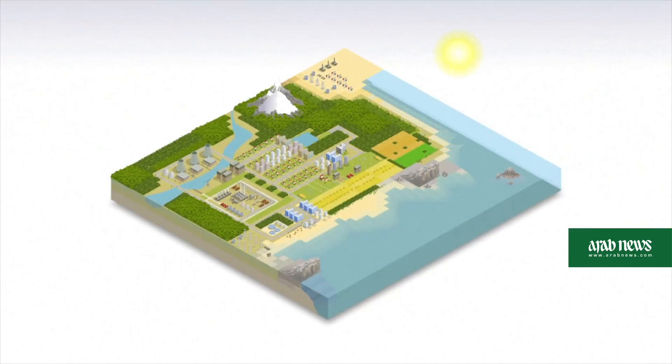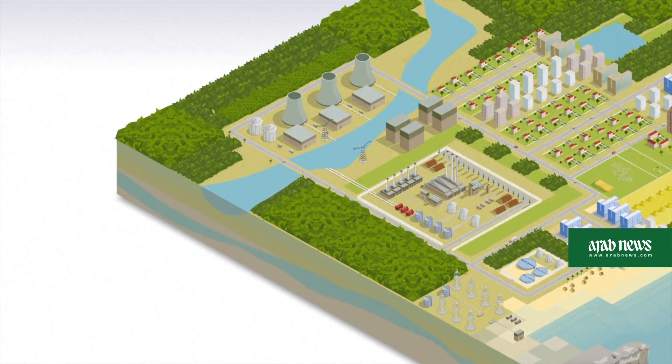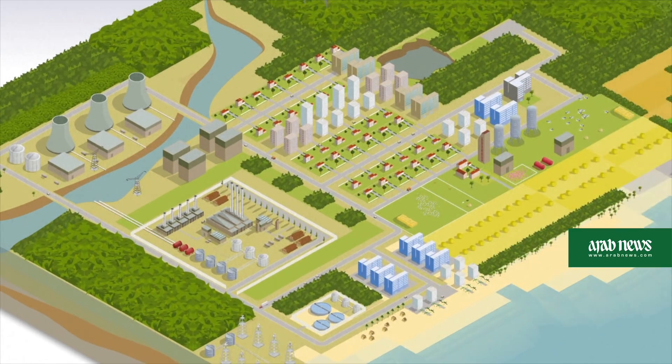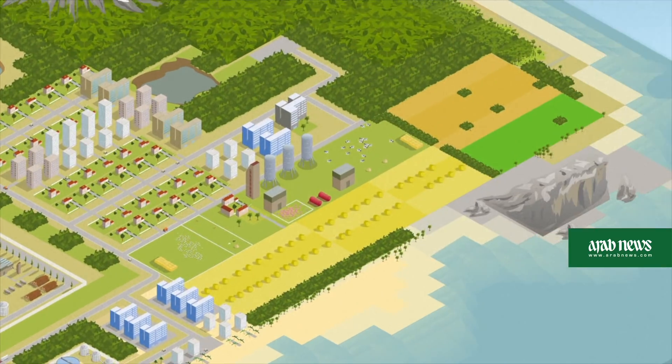Droughts can affect surface soils as well as deep water reserves. The former is a case of meteorological drought where the lack of rain affects and ruins crops. Often, however, drought conditions are aggravated by other factors.